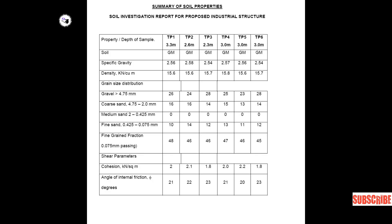Summary of soil properties from the soil investigation report for the proposed industrial structure: Trial Pit 1 — depth 3.3 meters; Trial Pit 2 — depth 2.6 meters; Trial Pit 3 — depth 2.3 meters; Trial Pit 4 — 3 meters; Trial Pit 5 — 3 meters; Trial Pit 6 — 3 meters. Soil type is silty gravel in all pits.